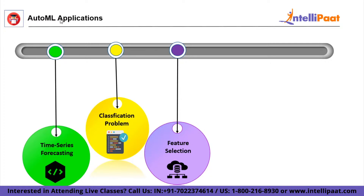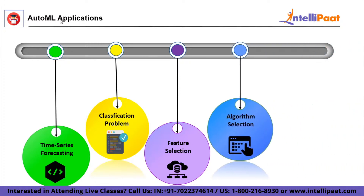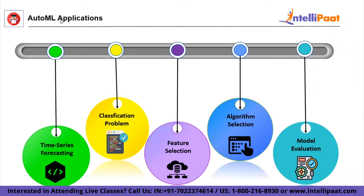By applying an automated evaluation procedure to get a mix of stable and strong features, AutoML simplifies the feature selection process. At number four, we have algorithm selection — the most daunting task in machine learning is finding an optimal algorithm. Data scientists can infer the right algorithm by referring to a dataset, and AutoML uses automation to identify the most suitable models and algorithms. Finally, we have model evaluation, a technique used to validate an ML model's performance — determining whether the model is overfitting or underfitting. AutoML automatically evaluates an ML model's efficiency among a given set of evaluation metrics.